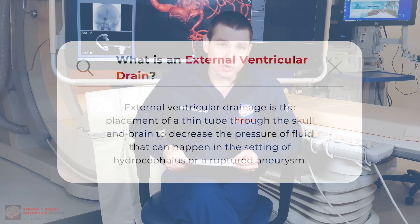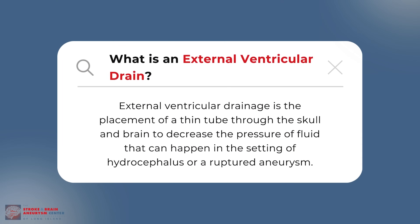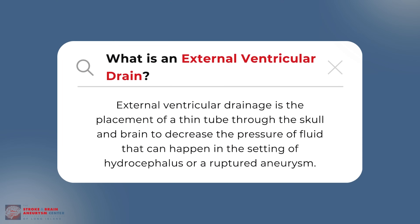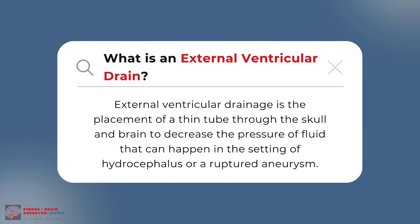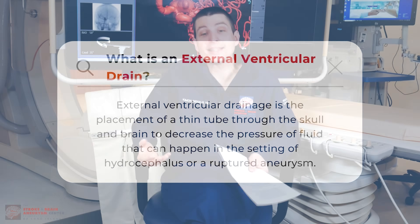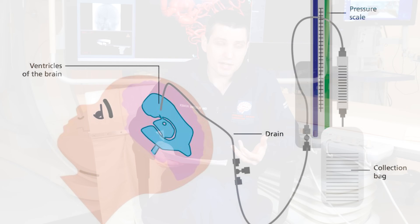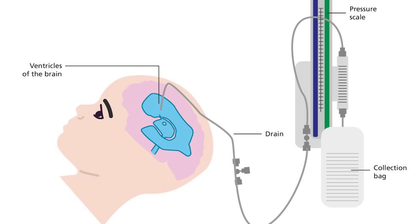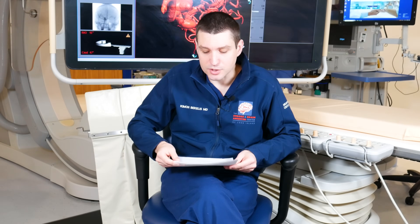The last term people asked about is external ventricular drain, or ventriculostomy. That is the placement of a thin tube through the skull and brain, inside the normal fluid spaces, to decrease fluid pressure. This can be done in the setting of hydrocephalus or pressure buildup secondary to a ruptured aneurysm.